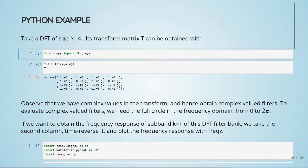Take a DFT of size n equals 4. Its transform matrix T can be obtained using FFT. We have our transform matrix here. Observe that we have complex values in the transform and hence we obtain complex valued filters. To evaluate complex valued filters we need the full circle in the frequency domain from 0 to 2π.